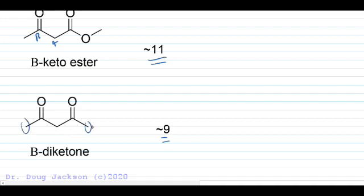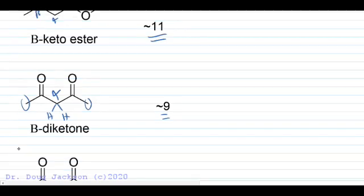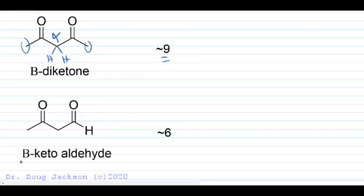In the beta diketone, there are alpha carbons on the outside, but the most acidic alpha carbon is the CH2 in the middle — it can resonate into either ketone, creating more resonance contributors. We only remove one proton at a time from that central position; the outer alpha carbons won't be deprotonated in the presence of that central one. Finally, the beta keto aldehyde: since aldehydes are a little more acidic than ketones, the pKa drops from 9 to about 6. The aldehyde wins nomenclature-wise.